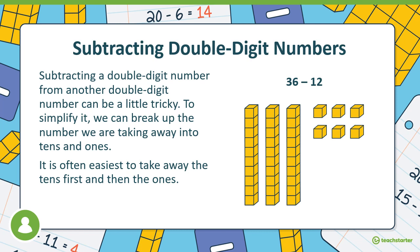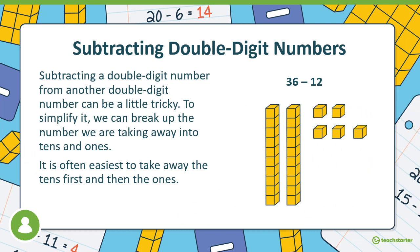Subtracting a double digit number from another double digit number can be a little tricky. To simplify it we can break it up, taking away into tens and ones. It is often easier to take away the tens first and then the ones. We can see here that 36 minus 12 — we've broken up the 36 into tens and ones, and then it's easier to take numbers away. It's especially easy with hands-on tools, which I encourage you to use if you struggle. So 36 minus 12 equals 24. It's always easier to break it into tens and ones.